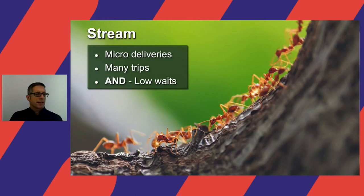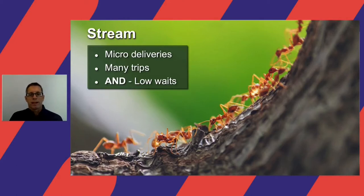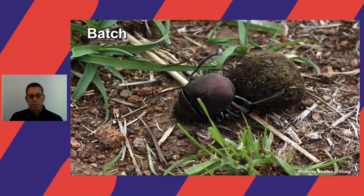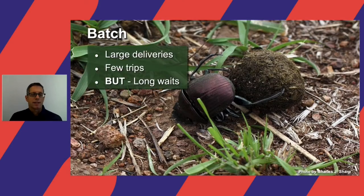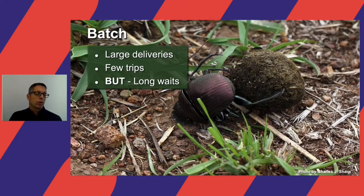Stream is basically doing micro deliveries, doing many small trips, and as a result you get low wait times — data comes in and very quickly gets delivered. Batch, on the other hand, is exactly the opposite. We make large deliveries, we make few trips, but you also have longer waits until your data arrives.